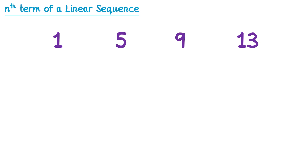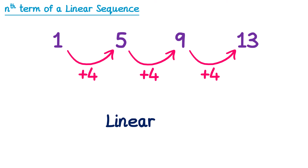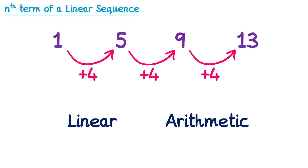In this sequence, to get from the first term to the second term, we add 4. To get from the second term to the third term, we also add 4, and it's the same again from the third to the fourth. Whenever we add the same number to get from one term to the next term, we call it a linear sequence. Another word sometimes used instead of linear is arithmetic, but they essentially mean the same thing.